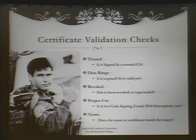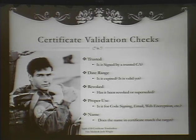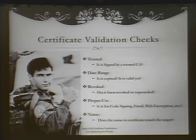Banks happen all the time, credit card companies — they forget to update their certificate and start scrambling to replace it. We also get revoked: if a certificate is compromised or superseded, we need to revoke the old certificate — we no longer trust you. This is the one people kind of forget about: proper use. Just because I've got a code signing certificate, it does not allow me to use that for web authentication and vice versa. And of course the name — we've got to check the CN — in the case of web traffic, we compare it to the domain to make sure it matches.